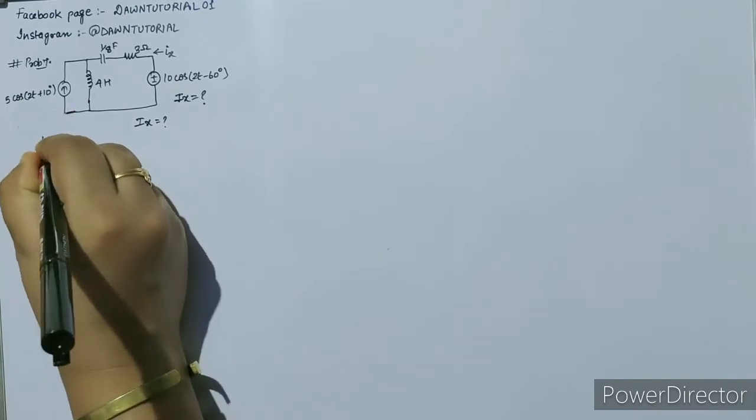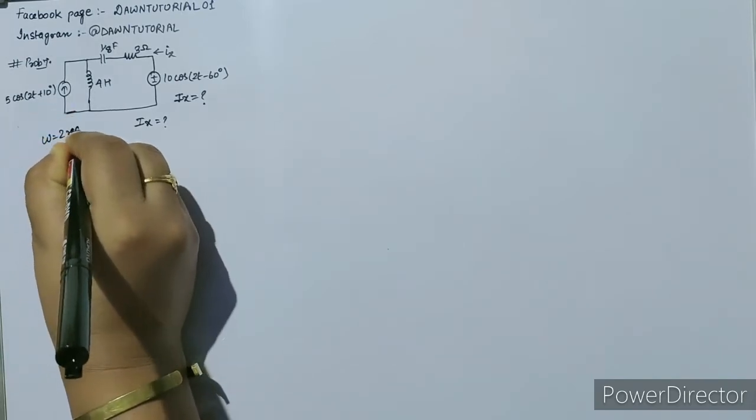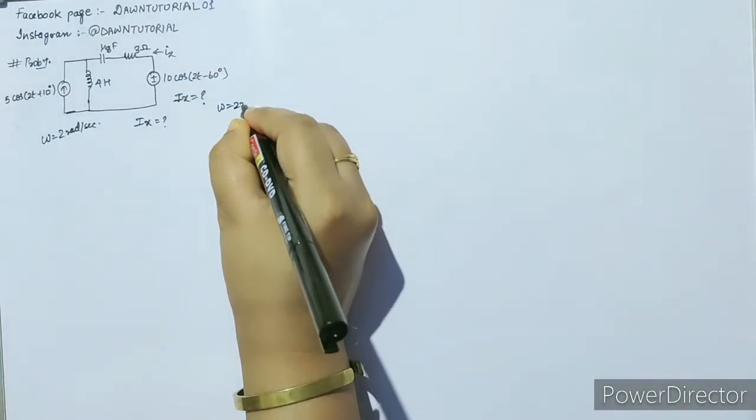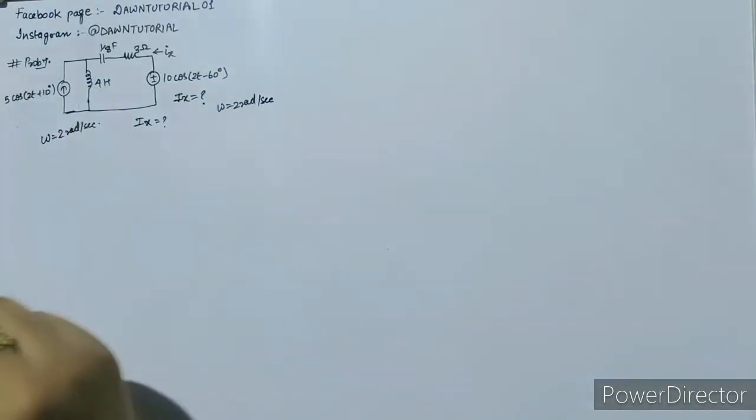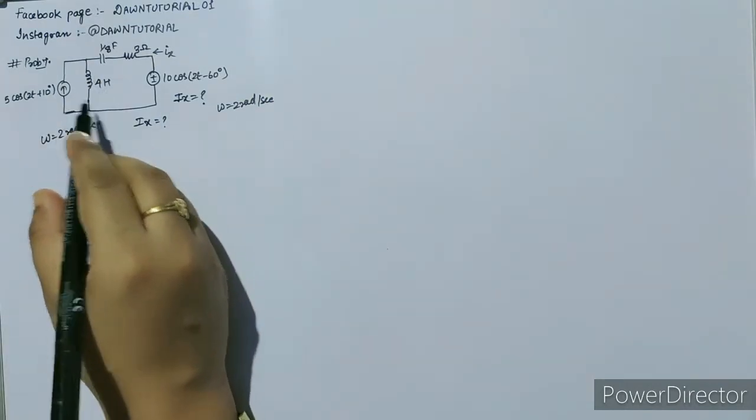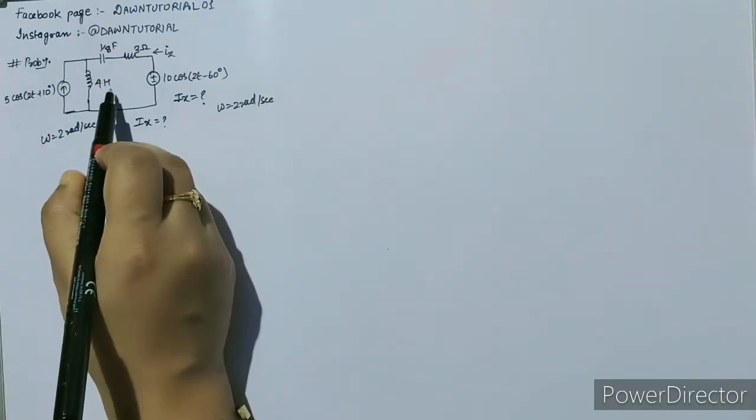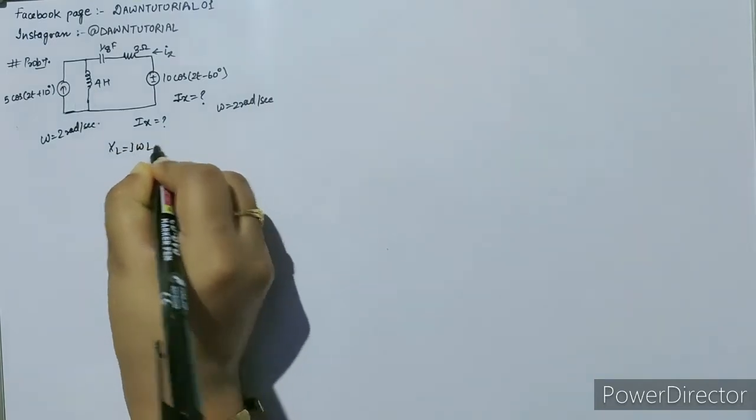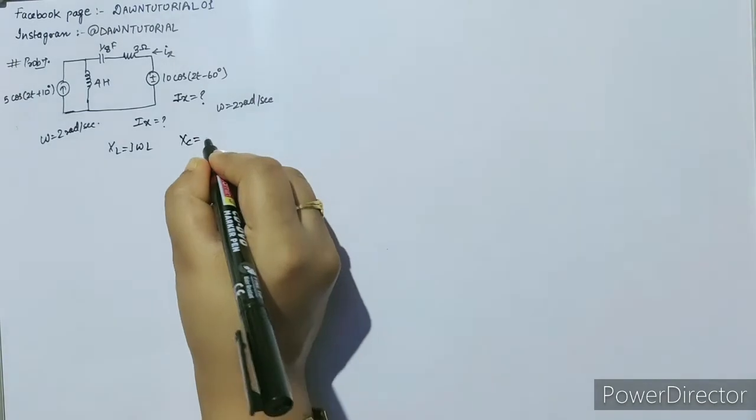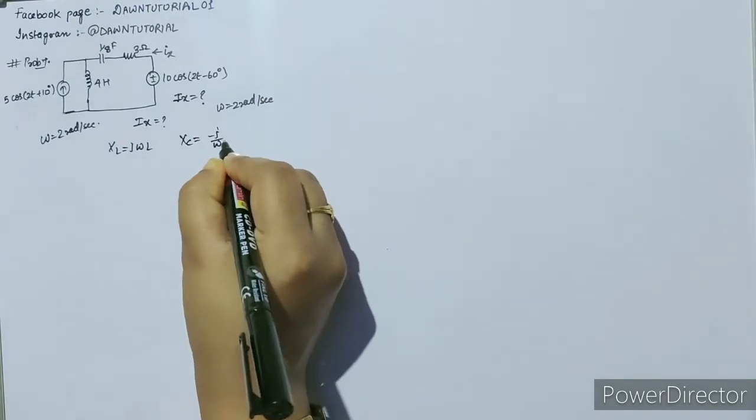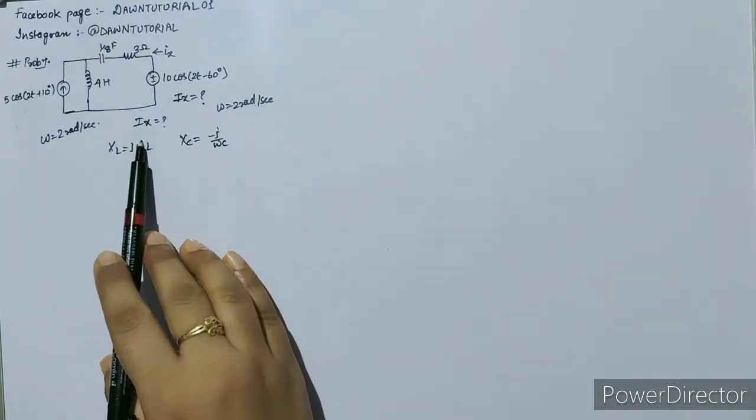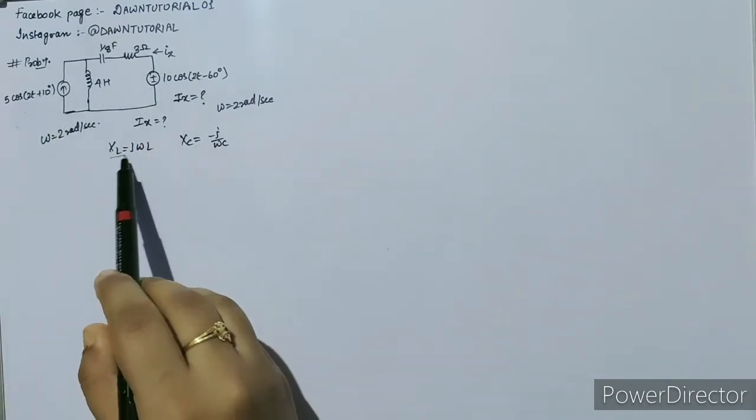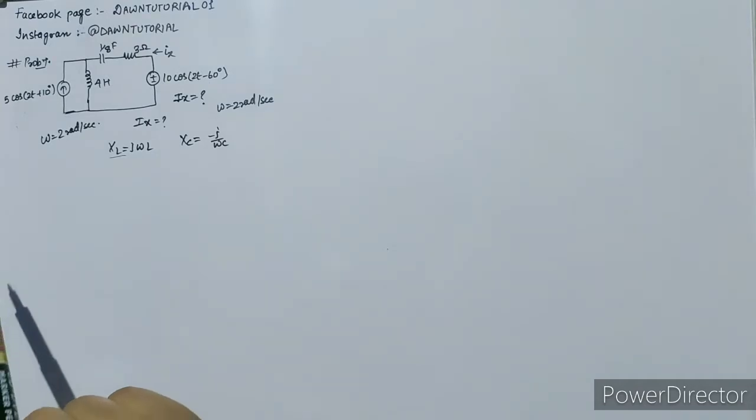Here the frequency is 2 radian per second, and here also the frequency is 2 radian per second. Since XL, in phasor domain or frequency domain, we write this inductor as XL, which is jωL, and XC is -j/(ωC). These two quantities depend upon omega.